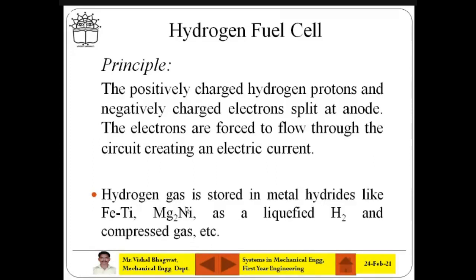Hydrogen gas is quite difficult to store. However, it can be stored in metal hydrides like iron titanium and magnesium nickel. Under compression it can be stored as a compressed gas in cylinders, or it can be liquefied as liquid hydrogen. So these are the different ways to store hydrogen gas — metal hydrides, compressed gas in cylinders, or liquefied hydrogen.